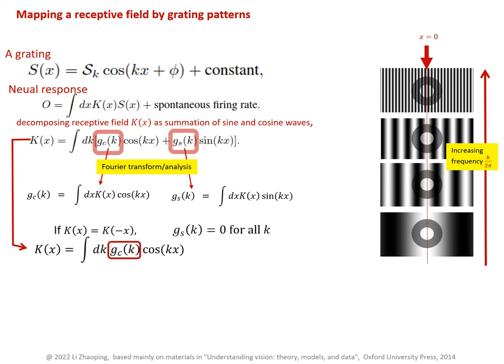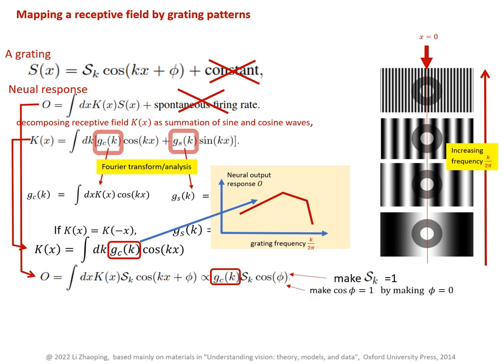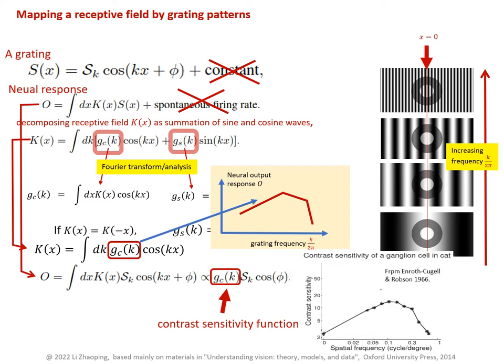So if we can measure these weights g_c, then we can construct the whole receptive field K(x). And these weights can indeed be obtained from neurons' responses to the gratings that we can measure, because these weights g_c is proportional to the neural responses to the gratings. So this we can see by making it even simpler by ignoring these constants. And then indeed the neural response O scales with these weights g_c. And if we make these contrasts S_k constant across k and also make all the gratings aligned with the receptive field by making the phase φ = 0, then the neural responses to the gratings give all our wanted weights g_c, and these weights as a function of k is called the contrast sensitivity function of this neuron.